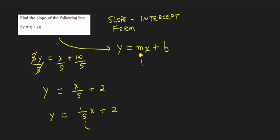When we write it like this, it's easier to see that the slope is equal to 1/5. And so that's the answer.